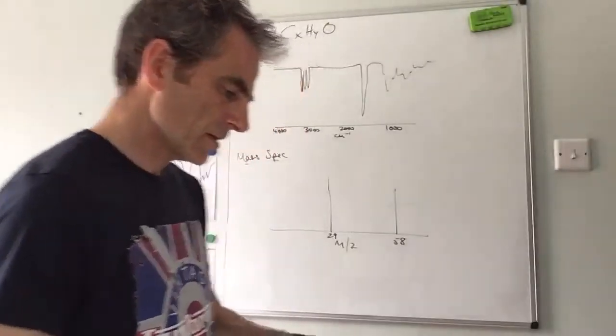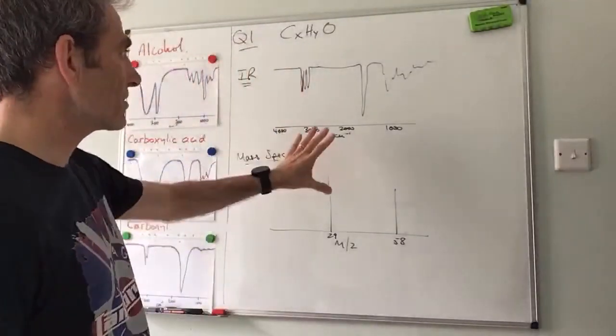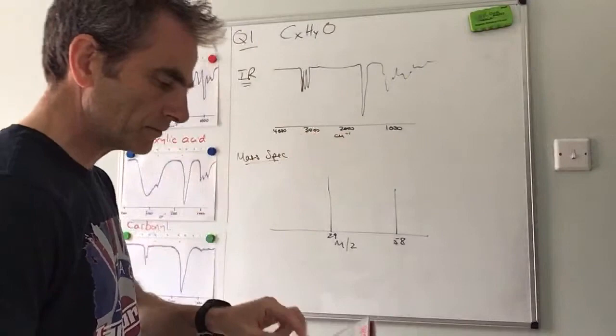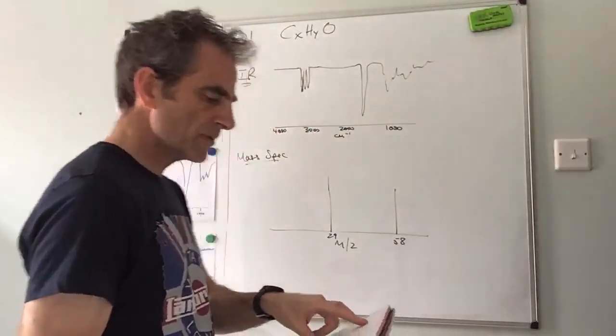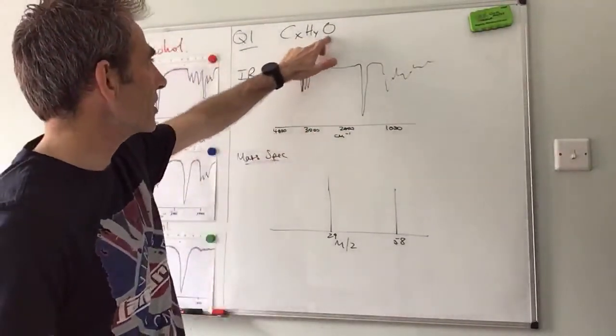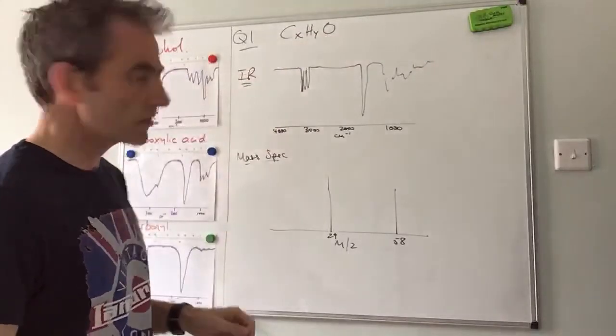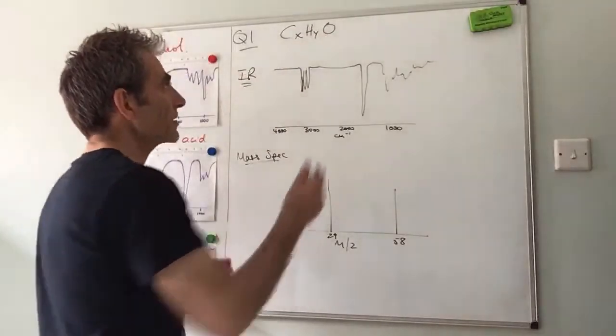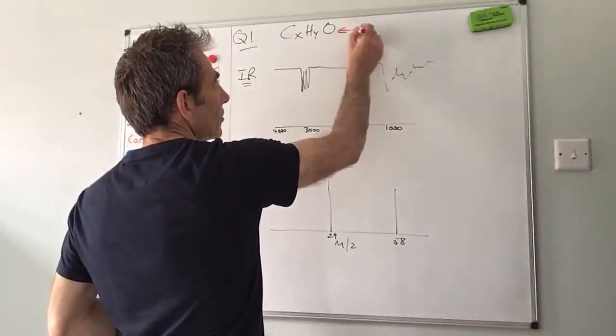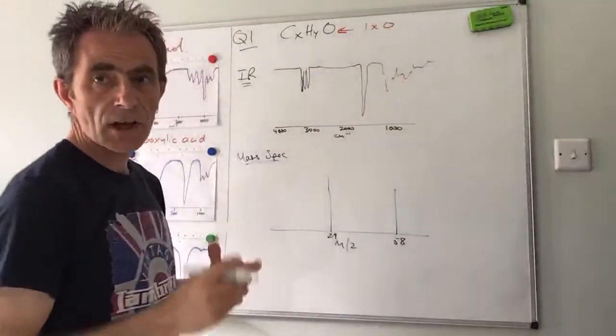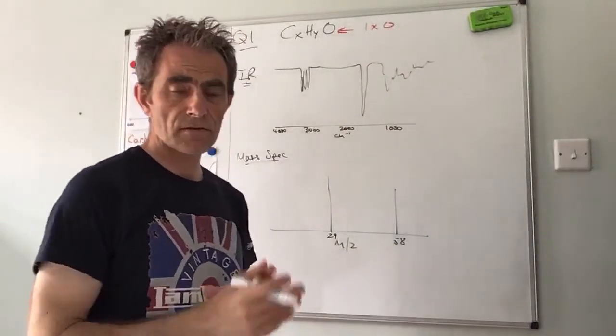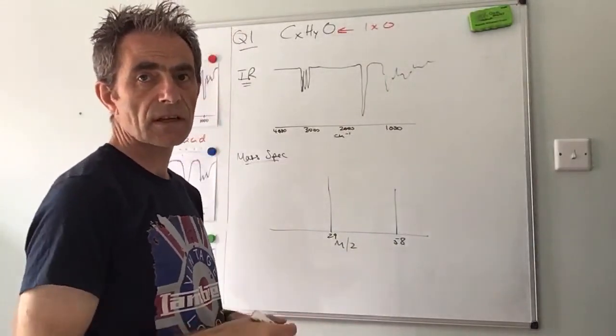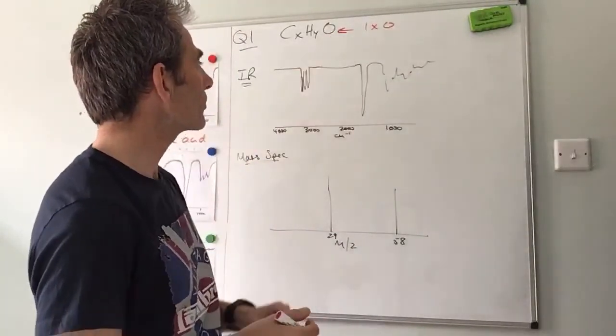So the first of the two questions was this one here. We've got this pollutant CXHYO. The first thing I would say is there's only one oxygen in it, so it can't be a carboxylic acid. Straight away you know it's not a carboxylic acid because it's only got one oxygen.